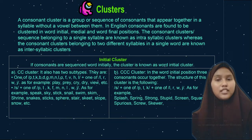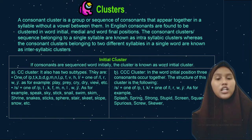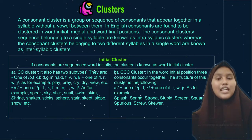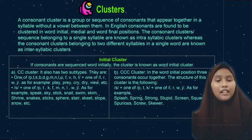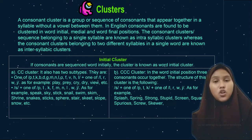CCC clusters: in the word-initial position, three consonants occur together. The structure is S plus one of P, D, K, plus one of L, R, W, or J. Examples include: splash, spring, strong, submit, and many more.